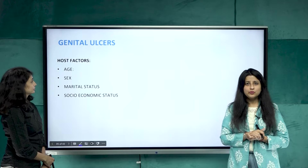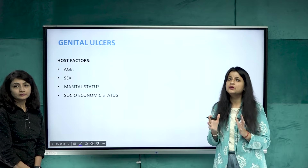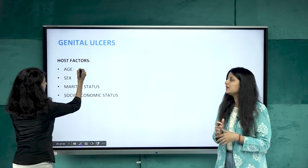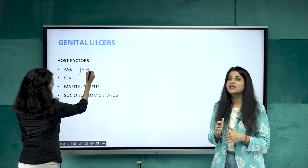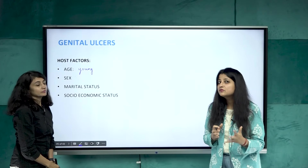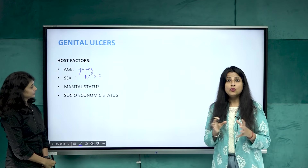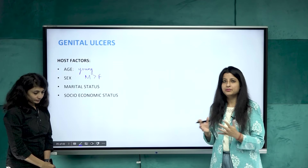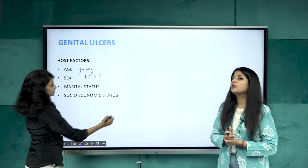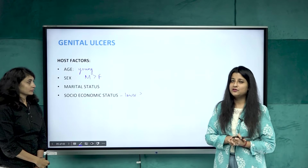When talking about epidemiology and PSM for any disease, we have to consider the host factor, age, and mode of transmission. For all genital ulcers, the age of presentation is mostly between 24 to 29 years, or even 15 to 25 years. Morbidity is more among males. Marital status is very important — broken homes, divorced couples indulging in unsafe sexual practices lead to STDs. It predominantly affects the lower socio-economic class.